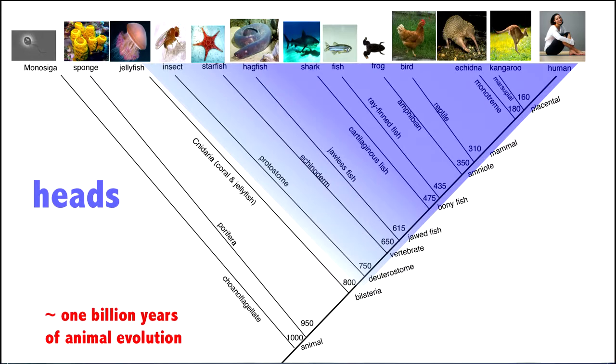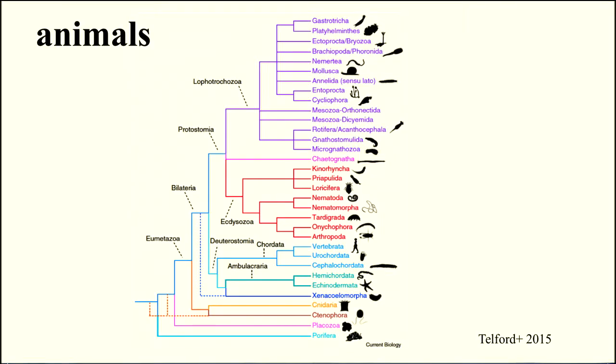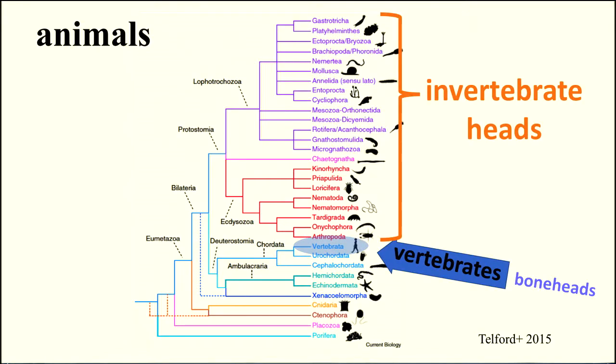But heads are not always the same. They're not all created equal. Here are the bone-headed things, also known as vertebrates. And here are the invertebrate heads with soft heads. Let's look at another phylogenetic tree. It's the same kind of thing. But here are the vertebrates with bone heads. And right here are invertebrate soft-headed things.